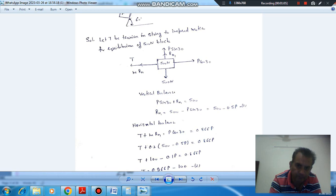P sin 30, R_N1 and 500N downward. So as there is string on this side, this string will cause the motion to impend. So T is the tension in the string and as the block is trying to move in this direction, the force of friction is acting.